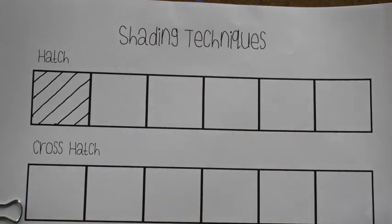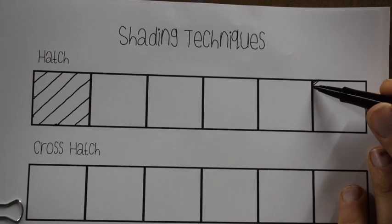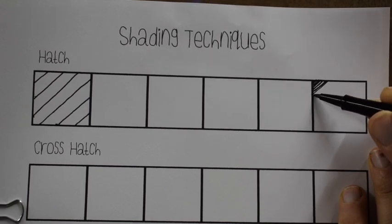And here's how this works. It's just like a value scale like the one we did a couple weeks ago, except it's about how close together your marks are. So your mark making becomes incredibly important when you're trying to do a different type of shading method.